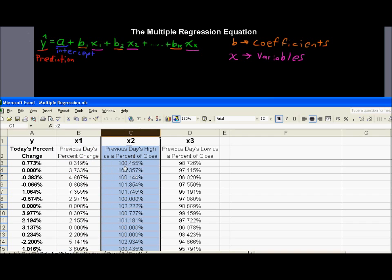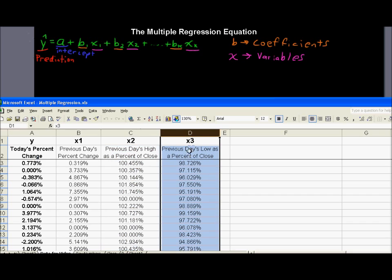And then previous day's high, so shares change value throughout the day. And sometimes it'll, like for example, it'll go up to ten dollars and then close at nine dollars. That's just an example. So what is that previous day's high as a percent of the previous day's close? And also, was the previous day's low as a percent of its close yesterday?